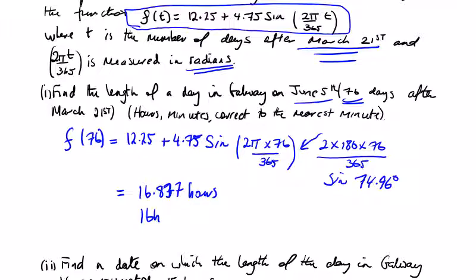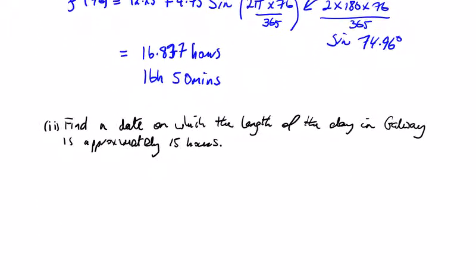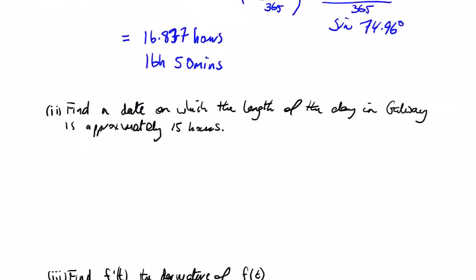So that's the length: 16 hours, and multiplying 0.837 by 60 we get 50 minutes, correct to the nearest minute.